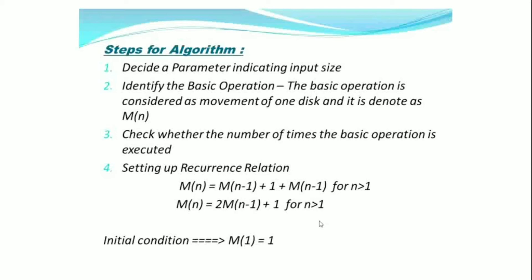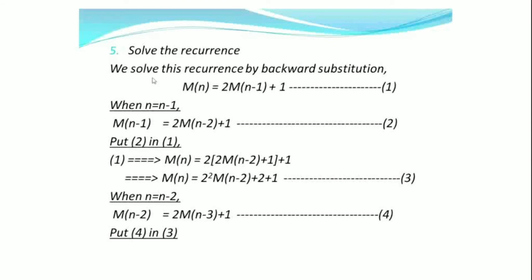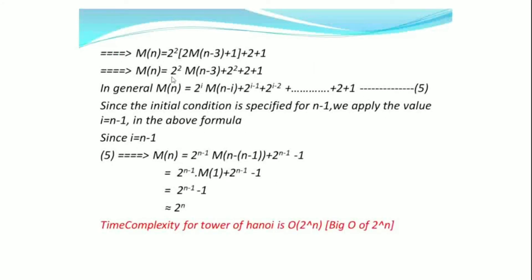Since it is a recurrence function, we are considering m(1) = 1. Step 5: Solve the recurrence. We solve this recurrence by backward substitution. m(n) = 2m(n-1) + 1 — consider it as the first equation. When n = n-1, m(n-1) = 2m(n-2) + 1 — consider it as the second equation. Substituting equation 2 in 1, m(n) = 2²·m(n-2) + 2 + 1 — consider it as the third equation. When n = n-2, m(n-2) = 2m(n-3) + 1 — consider it as the fourth equation. Substituting equation 4 in 3, we get m(n) = 2²·m(n-3) + 2² + 2 + 1.